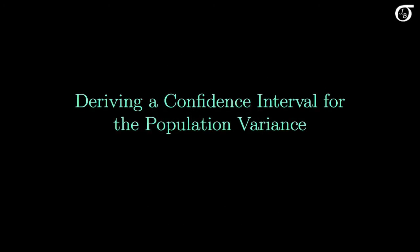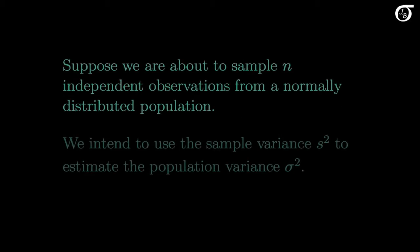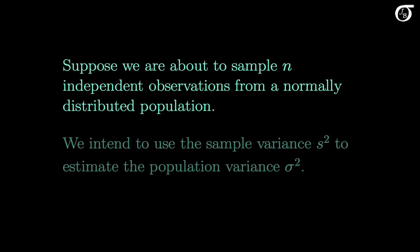Let's derive a confidence interval for the population variance when we are sampling from a normally distributed population. In this video I'm going to derive the appropriate formula for a confidence interval for the variance, but I don't do any examples or calculations. Suppose we are about to sample n independent observations from a normally distributed population, and we intend to use the sample variance s-squared to estimate the population variance sigma-squared.